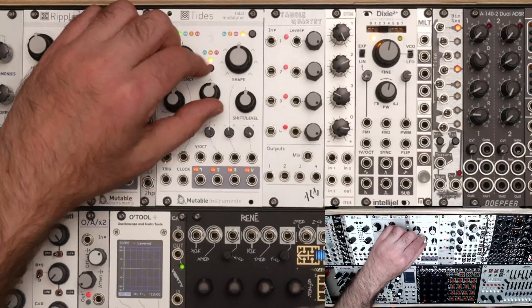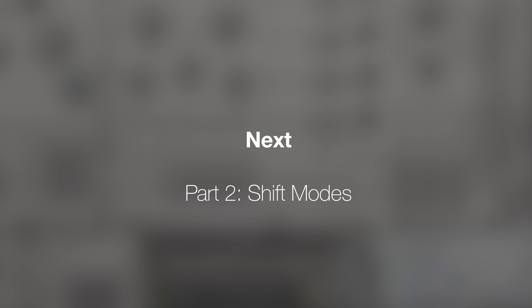So let me recap before we go on. Tides has basically two main modes: a one-time triggered function — either attack-decay or attack-release envelope — or a looping function where we get cycles. We can use the looping function at audio rate or at a slower speed to modulate. Within all of those, we have our choice of which wavetable shape we want to play. We can skew that shape left and right with slope for some customization, and we can process it either by running it through a filter or by wave-folding it with the smoothness knob.